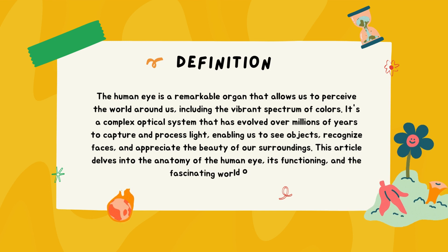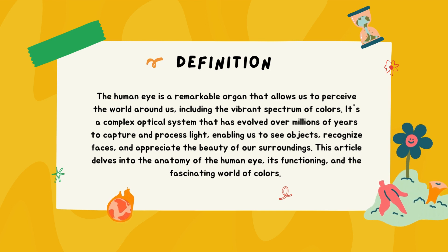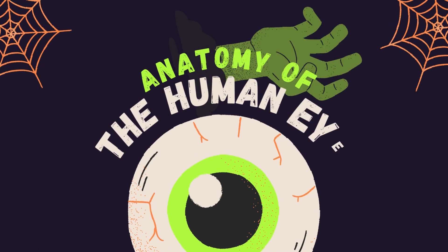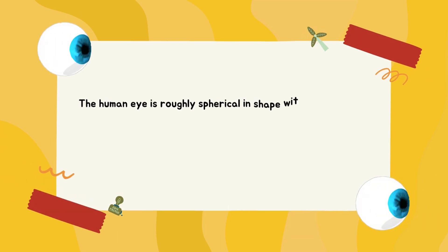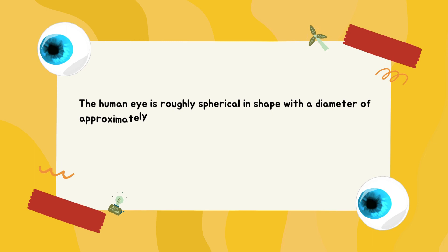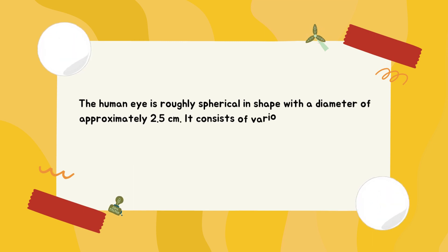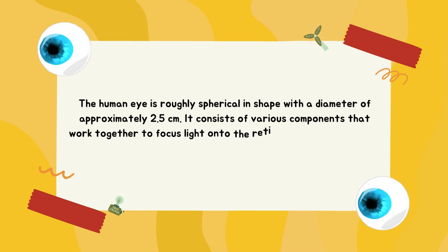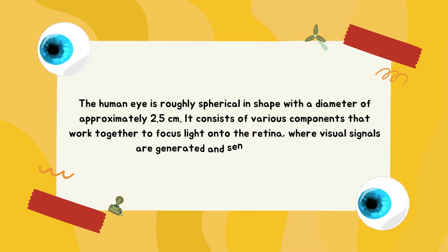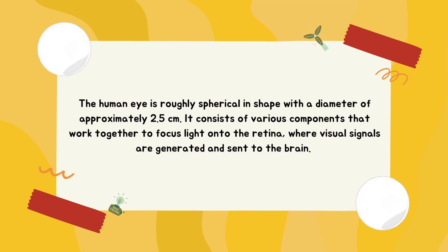This article delves into the anatomy of the human eye, its functioning, and the fascinating world of colors. The human eye is roughly spherical in shape with a diameter of approximately 2.5 cm. It consists of various components that work together to focus light onto the retina, where visual signals are generated and sent to the brain.